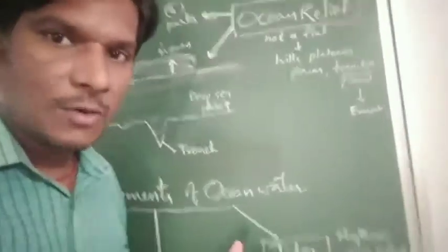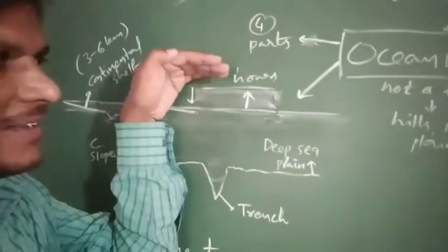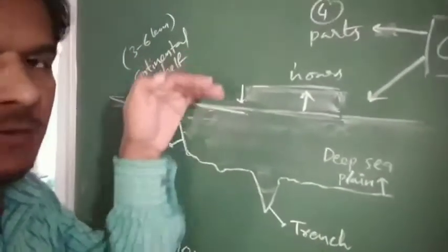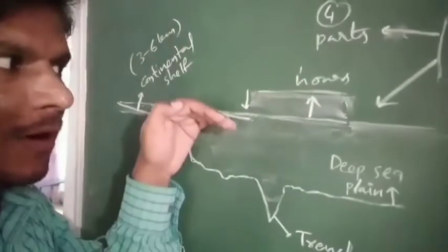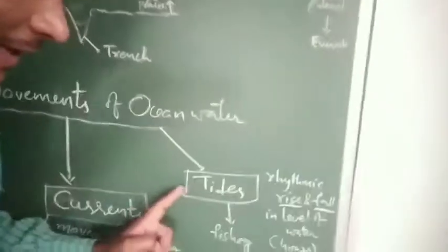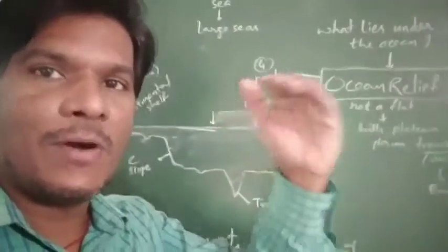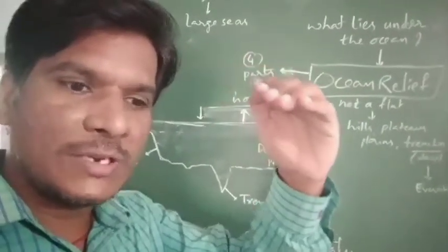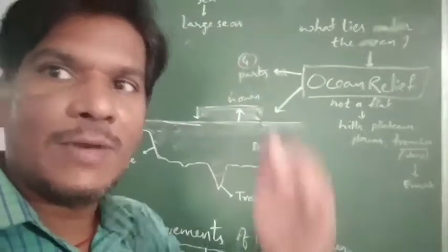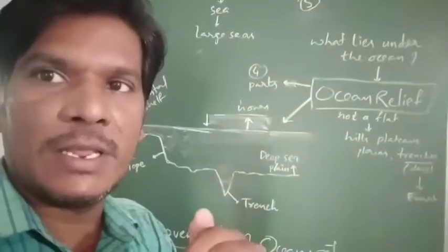Tides are the rhythmic rise and fall in the ocean surface level — for some hours the water level rises and for some hours it falls. Tides are useful for fishing: during high tides, ocean water comes to the coast making it easy to catch fish, and during low tides the ocean water goes back from the coastal area.